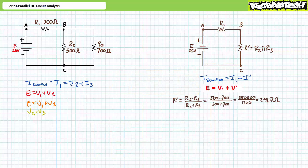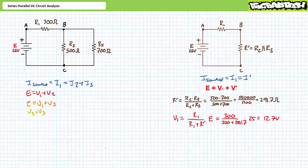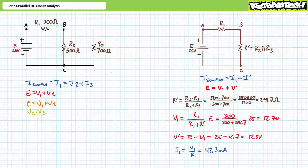First, the parallel combination of R2 and R3 results in simplification R single prime having a value of 291.7 ohms. There are several ways to obtain the desired figures. Given this is a pure series circuit, perhaps the easiest most direct means is through the use of the voltage divider rule. An application of the voltage divider rule demonstrates that V1 equals 12.7 volts. An algebraic rearrangement of the Kirchhoff's voltage law equation demonstrates that V single prime will be the remaining 12.3 volts. An application of Ohm's law demonstrates that I1 equals 42.3 milliamperes. Given this is a pure series circuit, source current and I single prime are also 42.3 milliamperes.